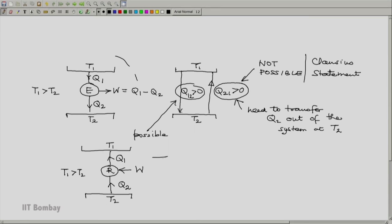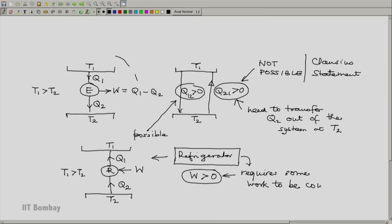This cyclic device is usually known as a refrigerator. And the Clausius statement of the second law of thermodynamics says that W must be greater than 0. That means, refrigerator requires some work to be consumed, just the way engine requires some heat energy to be rejected.